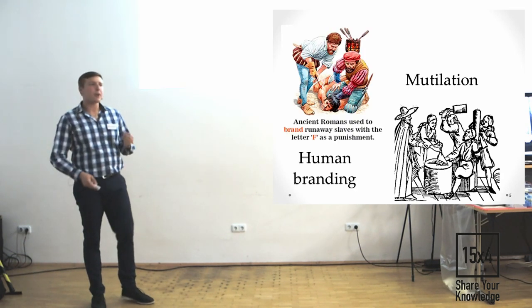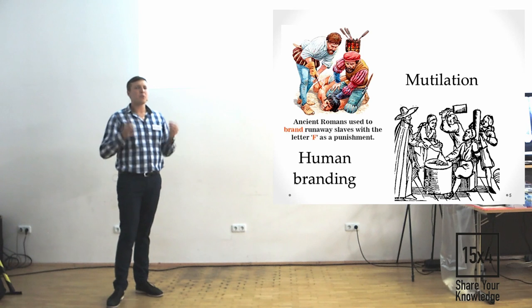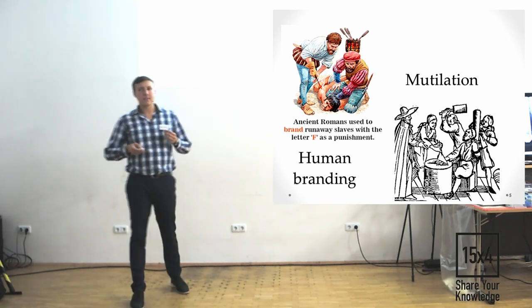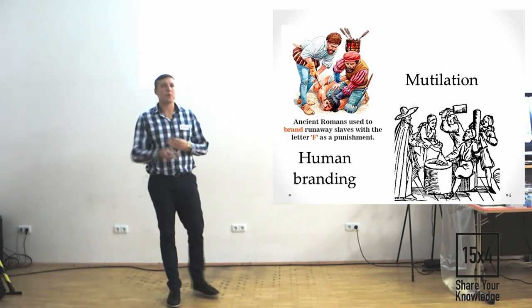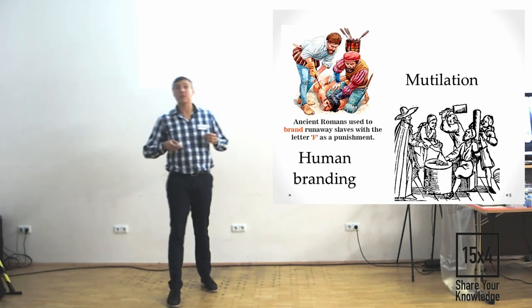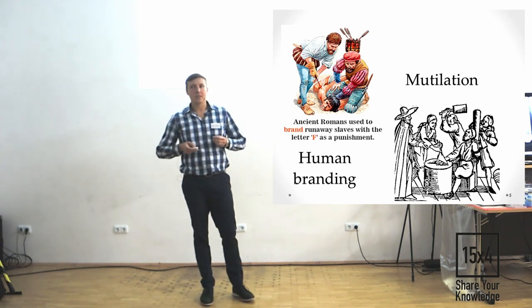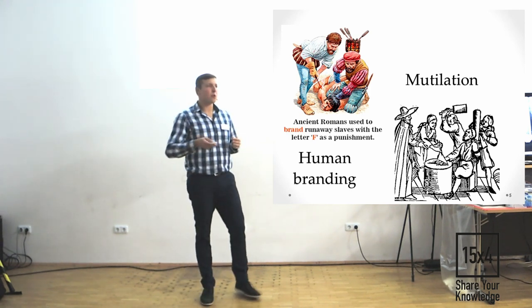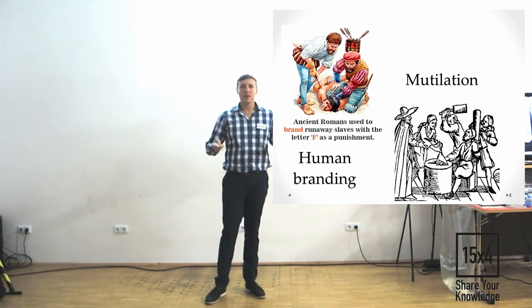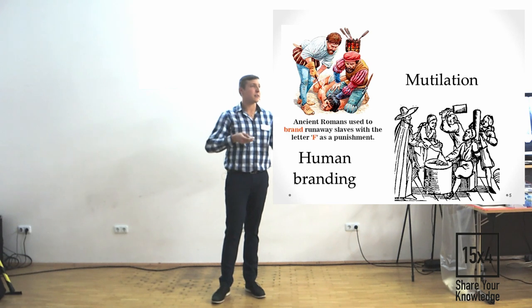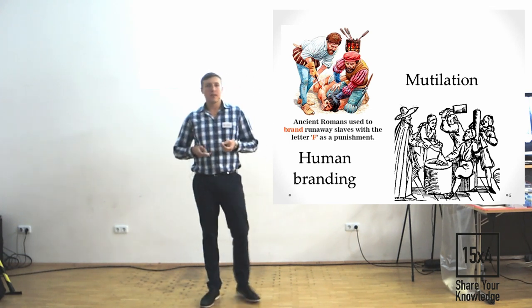Mutilation and human branding, it was a normal practice of criminal identification for thousands of years. The thieves got worse, the hands cut off, the heretics lost their tongues. In the 19th century, the beginning of the 19th century, the practice of mutilation almost completely disappeared from Europe. In that time, the success of investigation completely relied on the talent and experience of investigator.